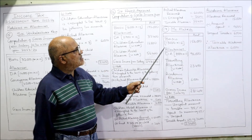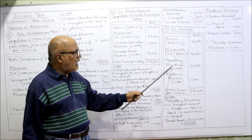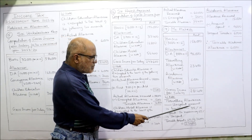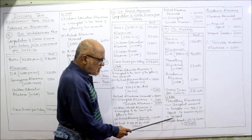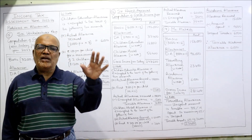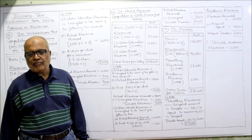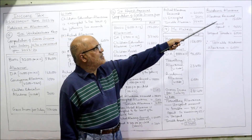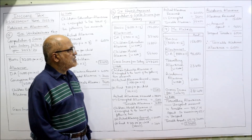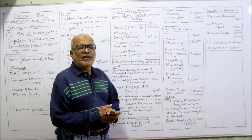Basic pay: 13,000 per month into 12 equals 1,56,000. DA: 8,000 per month into 12 equals 96,000. Travelling allowance working note: unspent amount is taxable. 35% is spent so 65% is unspent. 65% of 36,000 (3,000 per month into 12) equals 23,400 — this is taxable. Academic allowance received: 15,000, less amount spent: 9,000, unspent amount: 6,000 — that 6,000 is taxable. Total gross income from salary is 2,81,400.